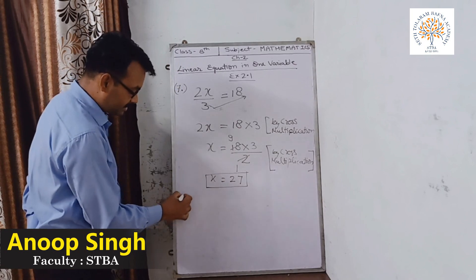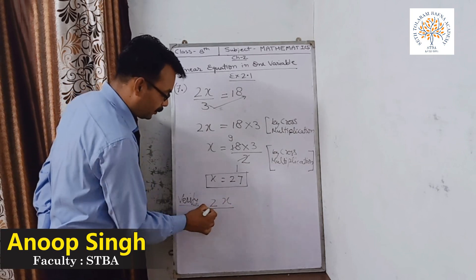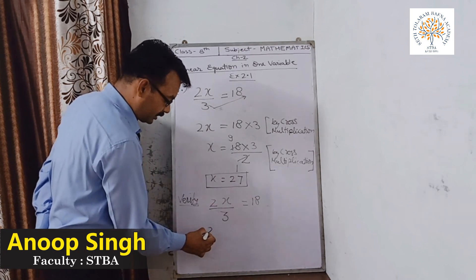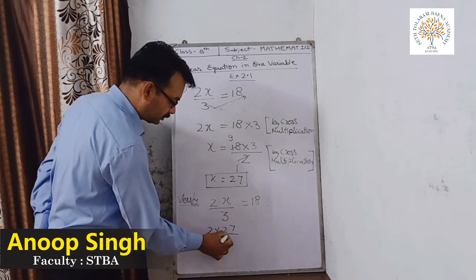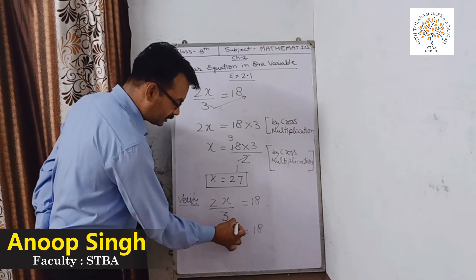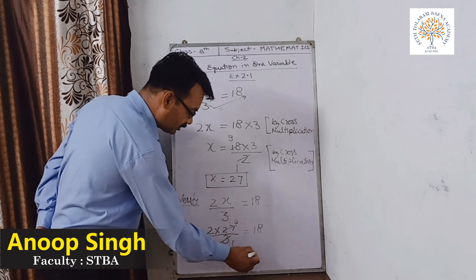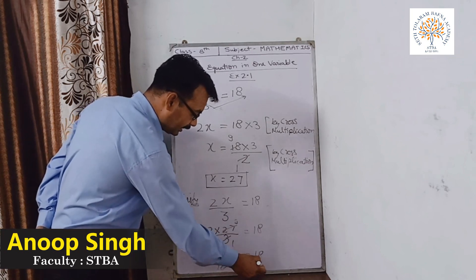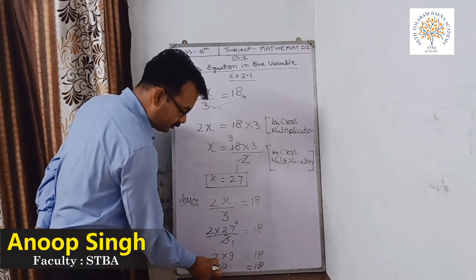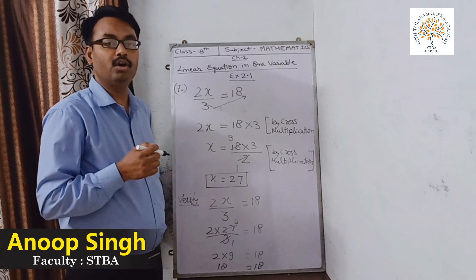How can we verify this? The equation is 2X upon 3 equals 18. Put the value of X as 27: 2 into 27 upon 3 equals 18. Cutting 27 with 3 using the table of 3 — 3 nines are 27 — so 2 into 9 equals 18, and 18 equals 18. Left-hand side equals right-hand side, so the value X equals 27 is the correct value of this equation.